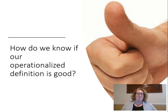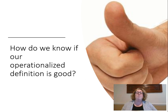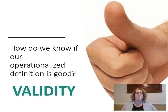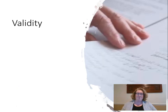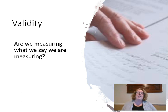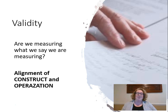So how do we know if our operationalized definition is good? There should be a match between our operational and our theoretical definitions. So if I defined achievement in mathematics to include geometry, computations, addition and subtraction, multiplication and division, and measurement, but my entire test was just addition and subtraction, then I wouldn't have a good operational definition. I didn't assess the entire construct, so I don't have a good match between my operational and theoretical definitions. We call that match between operational and theoretical definitions validity. We know we have a good operational definition if I have validity — if there's a match between what I want to measure, my theoretical definition, and my operational definition. Validity is really: am I measuring what I say I'm going to measure? It's that alignment between my construct and my operationalization.